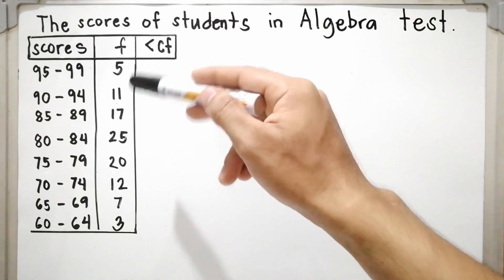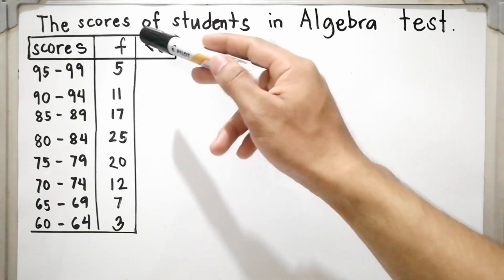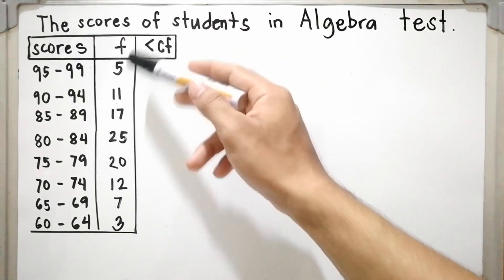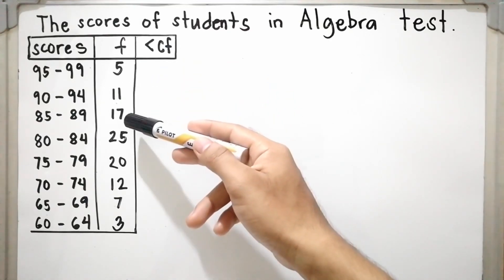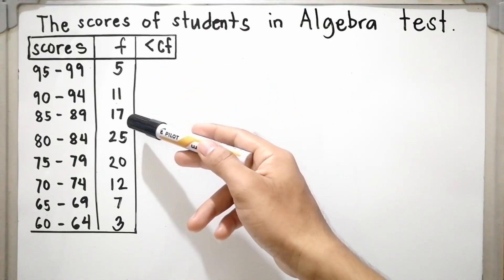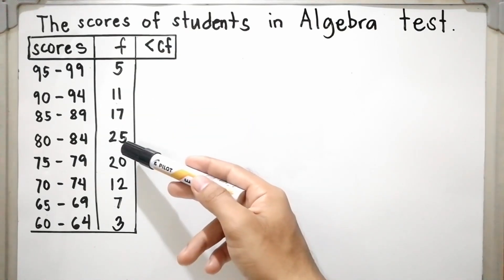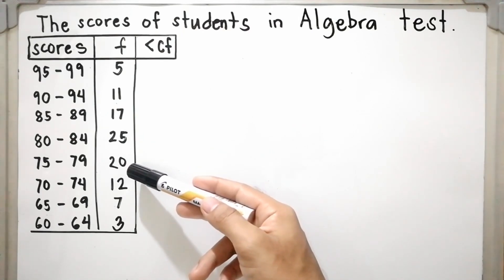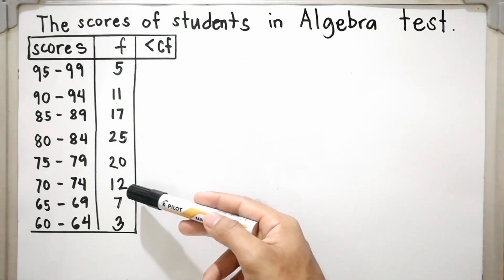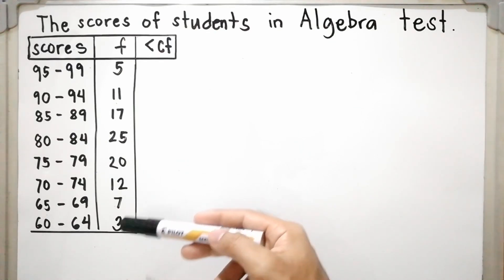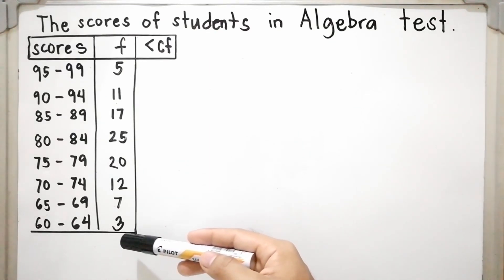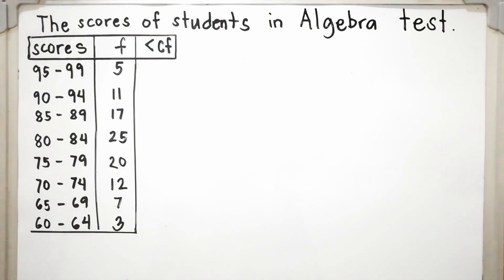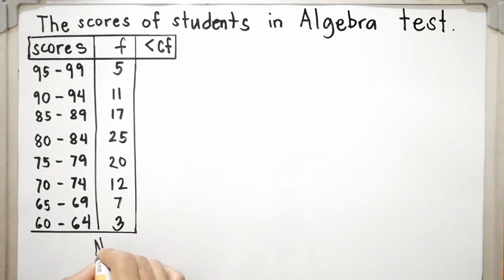To find how many students took the test, just add the frequencies: 5 plus 11 is 16, plus 17 is 33, plus 25 is 58, plus 20 is 78, plus 12 is 90, plus 7 is 97, plus 3 is 100. So there are 100 students who took the test, meaning N is equal to 100.